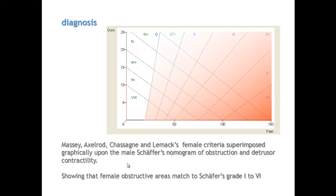We can use Schaefer's graphic to impose boundaries of obstruction for women: more than grade zero constitutes obstruction for women, while only grade zero represents non-obstruction. This relies on the earlier data from Chassagne, Lemak, Abrams, and Massé.